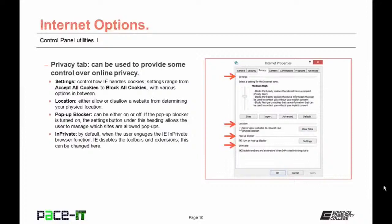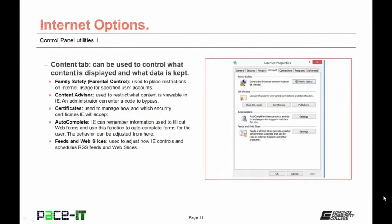The Content tab is used to control what content is displayed and what data is kept. The Family Safety section, also known as Parental Control, places restrictions on Internet usage for specific user accounts. Some versions have Content Advisor, used to place restrictions on what content is viewable in Internet Explorer. The Certificates section manages how and which security certificates Internet Explorer will accept. Internet Explorer can remember information to fill out web forms using the Autocomplete function, and this behavior can be adjusted here.